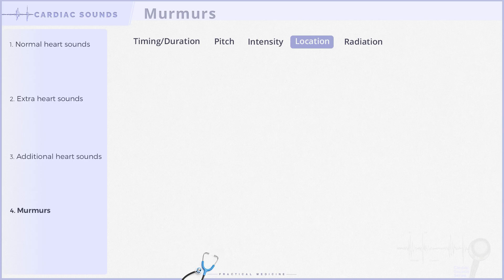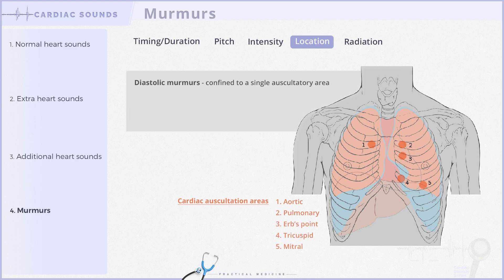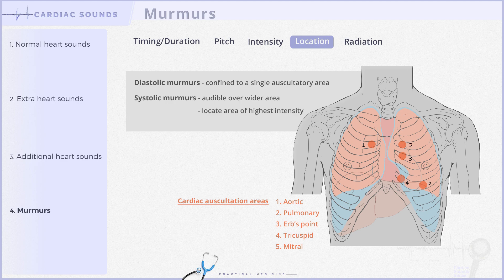Let's proceed to classify murmurs based on their location. During a precordial examination, it's crucial to auscultate all cardiac areas. Diastolic murmurs are confined to specific areas — for instance, the murmur of mitral stenosis is heard at the apex, while aortic regurgitation is audible over the left sternal edge. On the other hand, systolic murmurs, being louder, tend to be heard over a broader precordial area. Therefore, pinpoint where it's loudest and note any associated radiation.